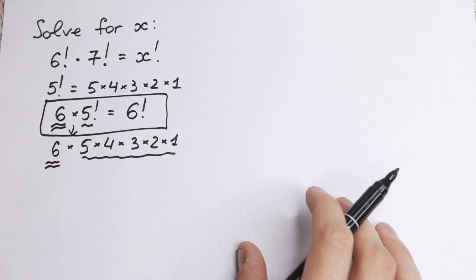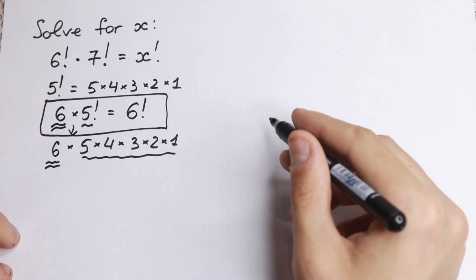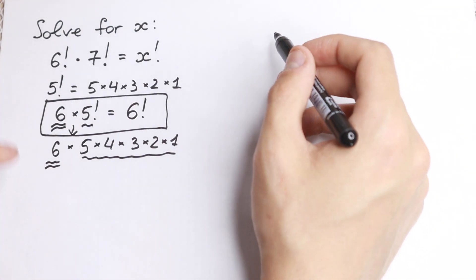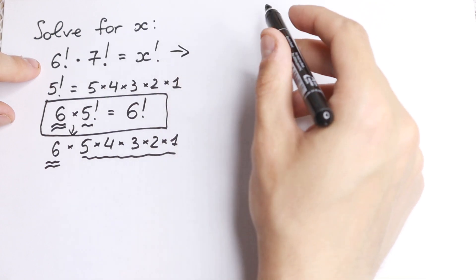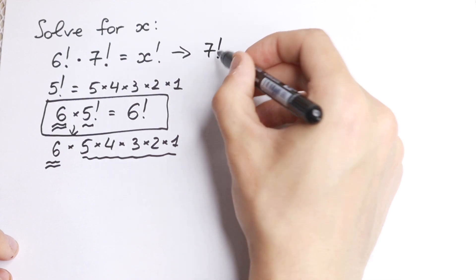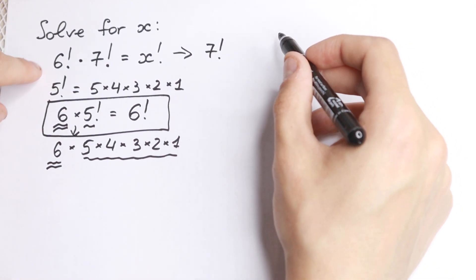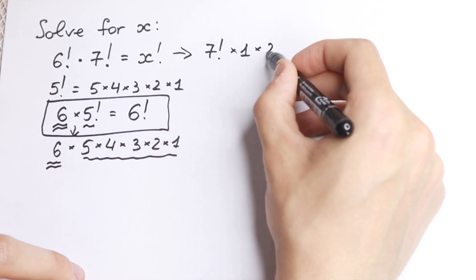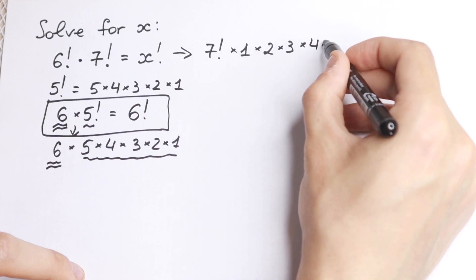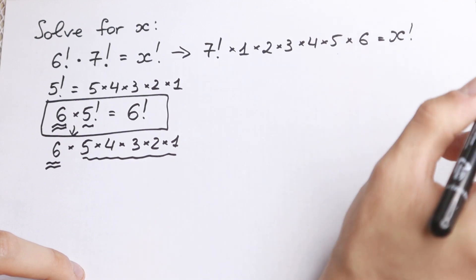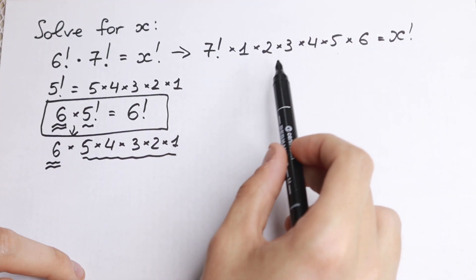This rule works not only with these numbers — we can change them, and I'll show you why this rule is useful. Now let's solve our question. We have 6 factorial and 7 factorial. Let's write 7 factorial first, then multiply it by 6 factorial, but let's write 6 factorial as its product: 1 times 2 times 3 times 4 times 5 times 6 equals x factorial.